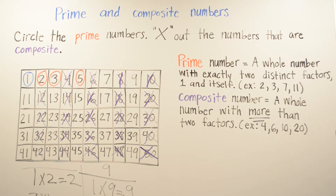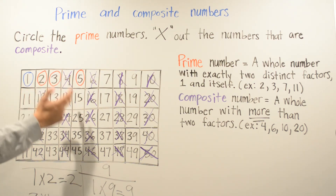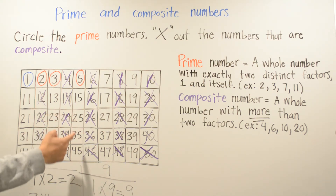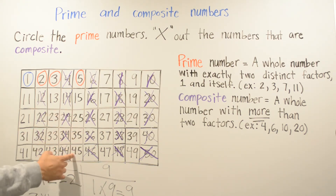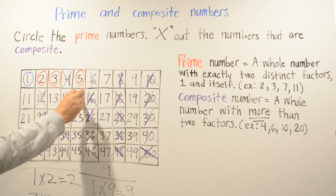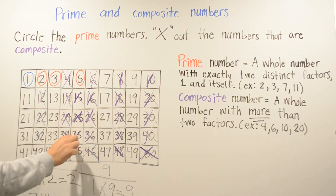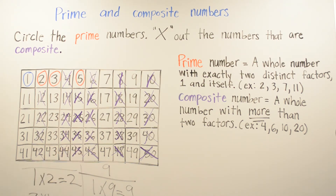Other numbers I can X out are the multiples of 5, because other than 5 itself, numbers like 10 are already even. For the others — 5 times 3, 5 times 4, 5 times 5, 5 times 7, 5 times 9 — they're going to have more than two factors. So I'm going to X out 15, 25, 35, and 45.